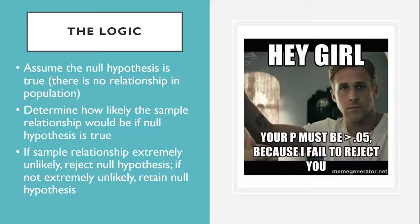Following this logic, we can begin to understand why Mill and his colleagues concluded that there is no difference in talkativeness between women and men in the population. In essence, they asked: if there were no difference in the population, how likely is it that we would find a small difference of d = 0.06 in our sample? Their answer was that this sample relationship would be fairly likely if the null hypothesis were true. Therefore, they retained the null hypothesis, concluding that there is no evidence of a sex difference in the population.